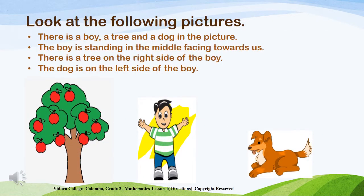Look at the following pictures. You can see a boy, a tree and a dog in this picture. The boy stands in the middle and you can see the dog sits on the left side of the boy and there is a tree standing on the right side of the boy.